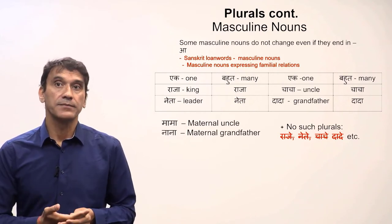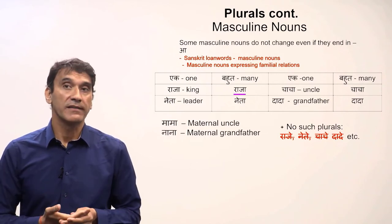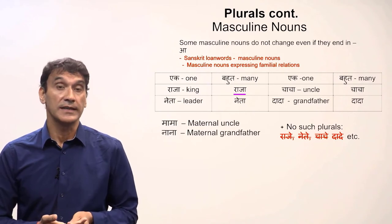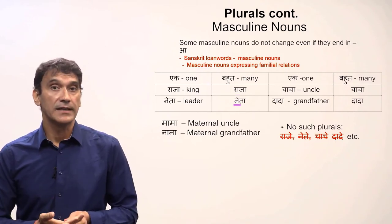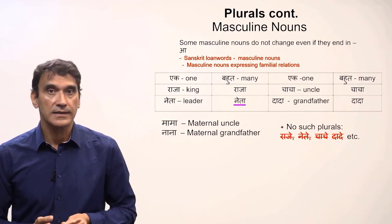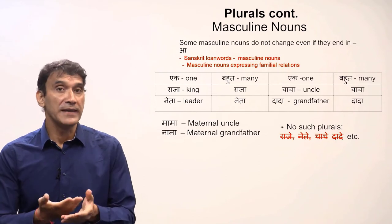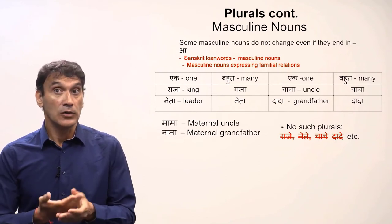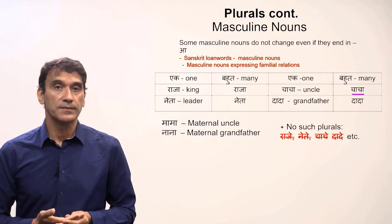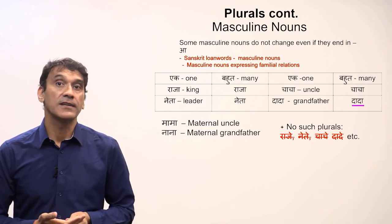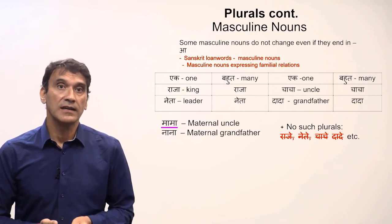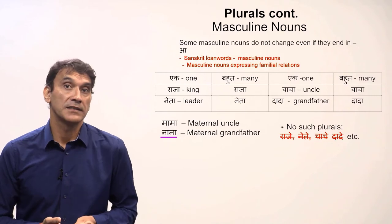There are some exceptions to this rule. Sanskrit loanwords that end in 'a' do not change. For example, 'raja' meaning 'a king' stays 'raja' in plural — it never becomes 'raje'. Similarly, 'neta' meaning 'a leader' stays 'neta' in plural. Masculine nouns expressing familial relations that end in 'a' also do not change — 'chacha' meaning 'uncle' stays 'chacha' in plural, 'dada' meaning 'grandfather' stays 'dada', and the same goes for 'mama' and 'nana'.